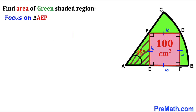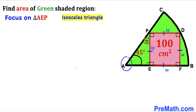Next, let's focus on right triangle AEP. We know this angle is 45 degrees and this angle is 90 degrees, so therefore this remaining angle has to be 45 degrees as well. Since both angles are 45 degrees, this is an isosceles triangle, meaning side PE equals side AE. Since PE is 10, side length AE is 10 centimeters as well.